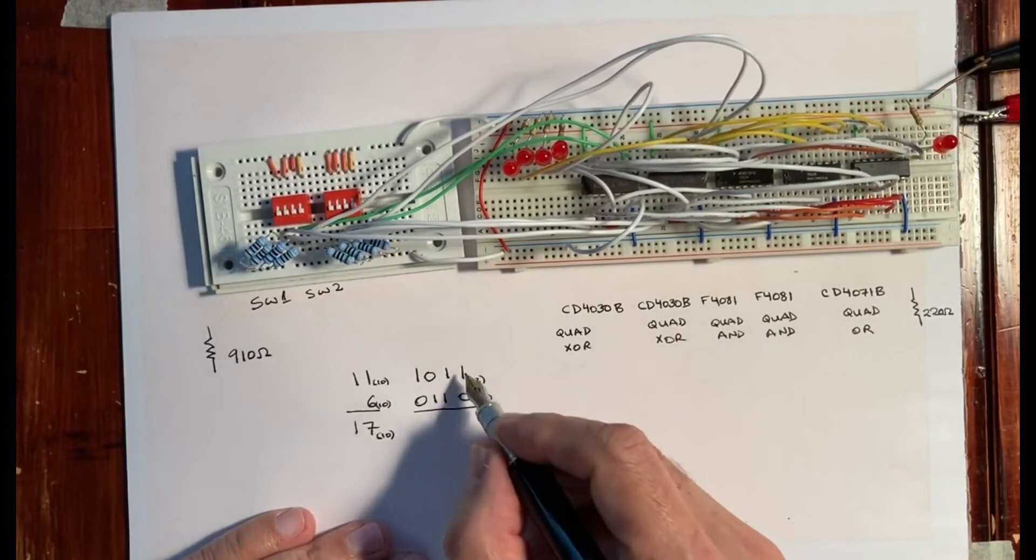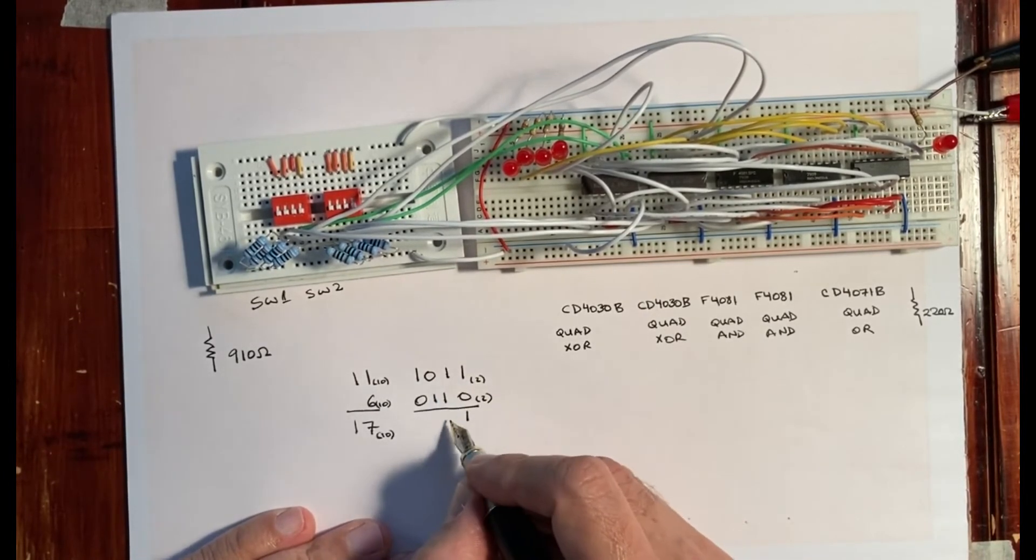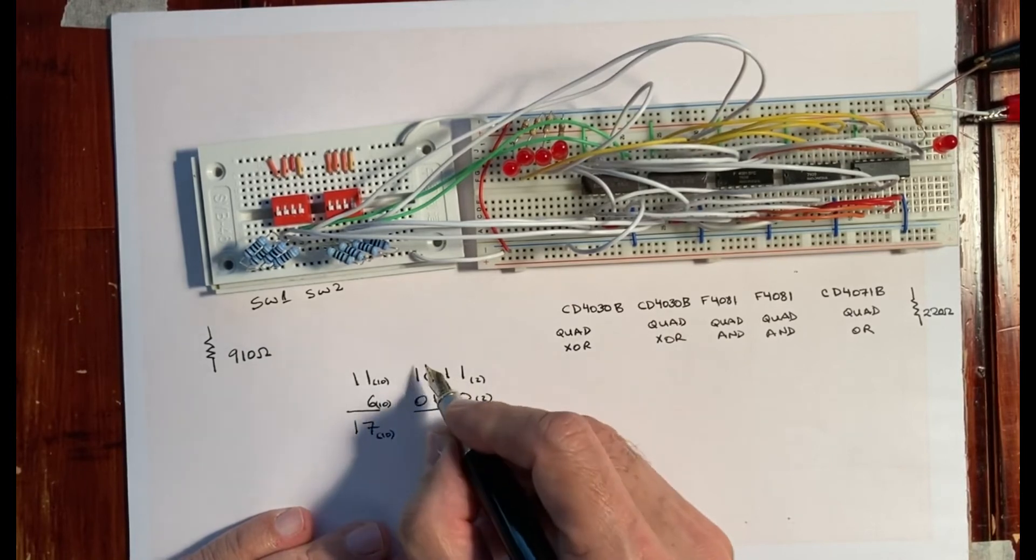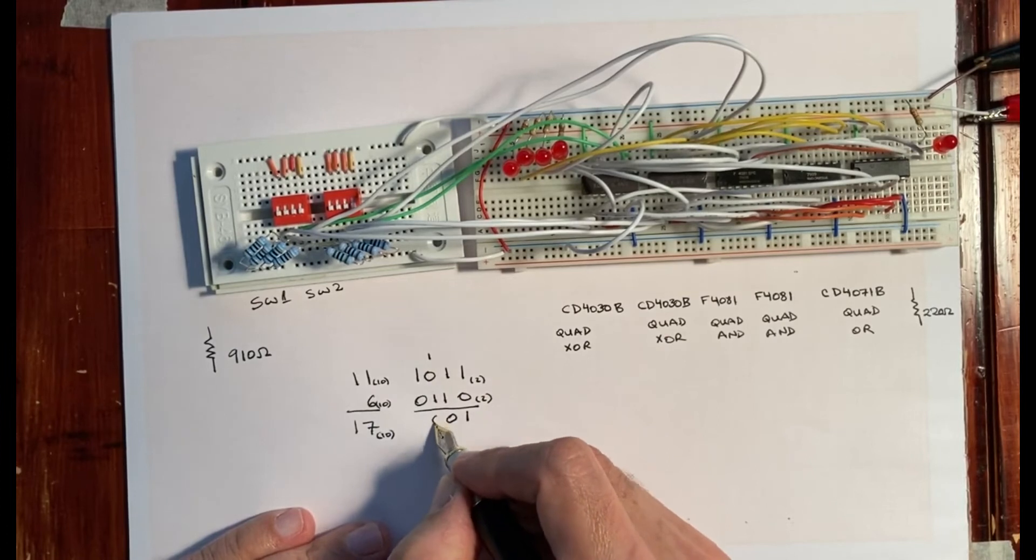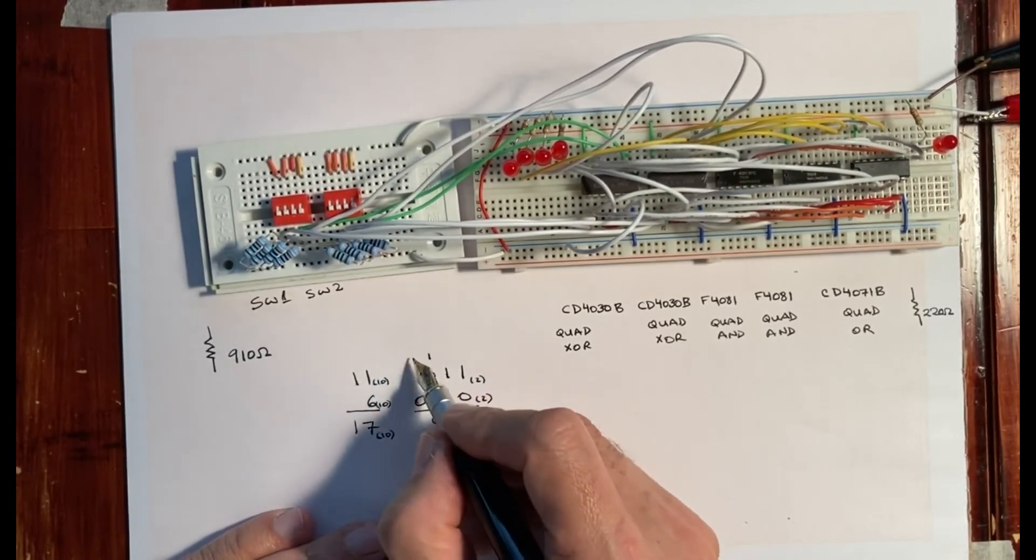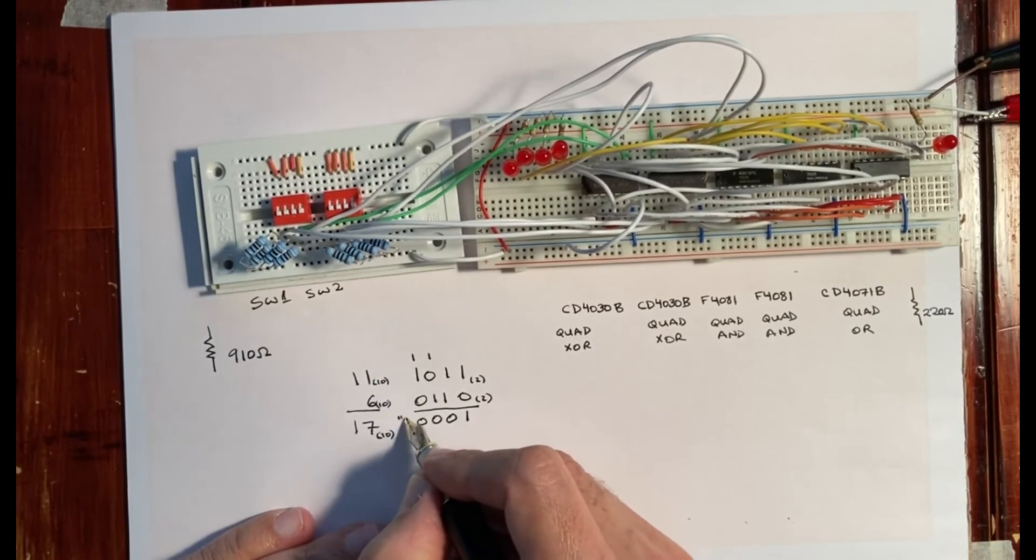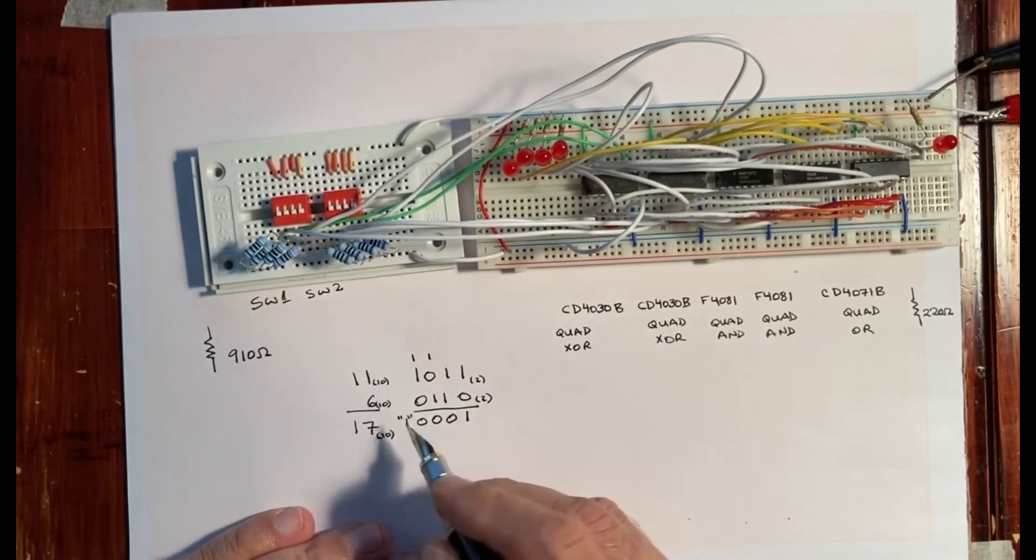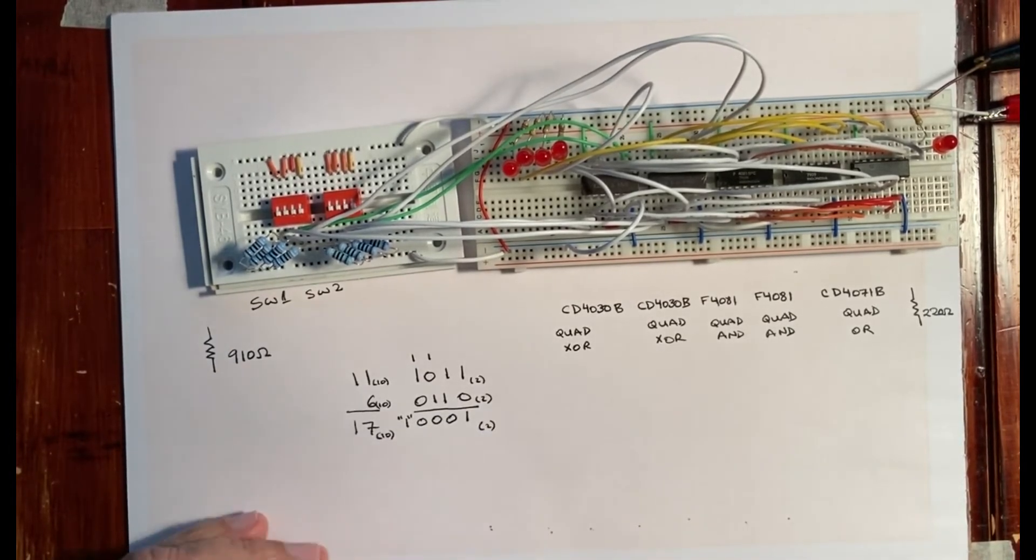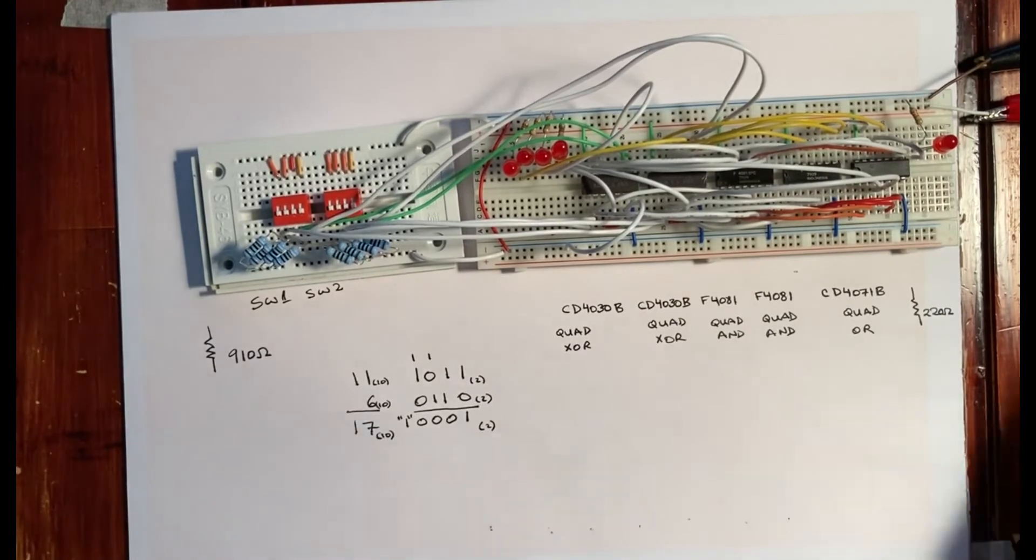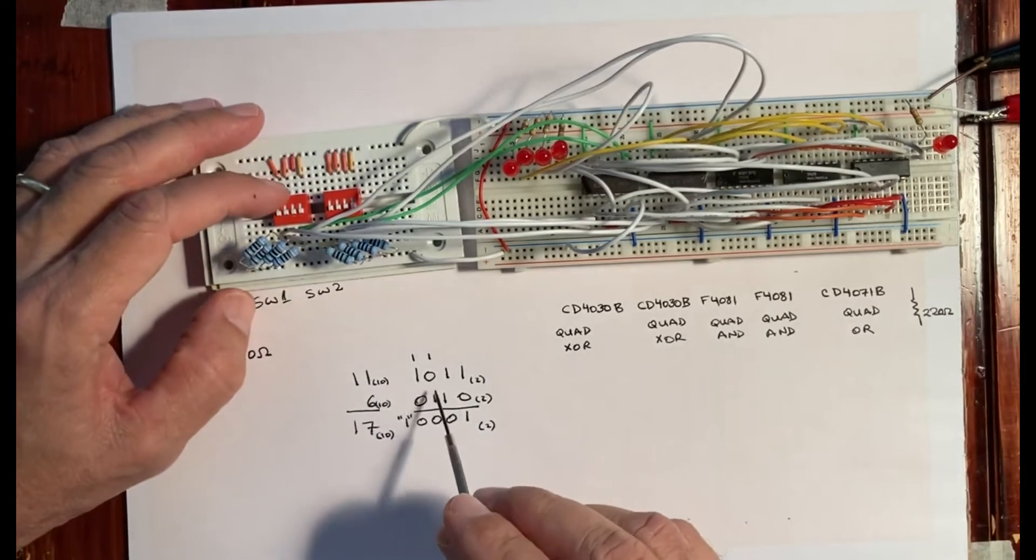And these are base 10. So then what we end up with is 1 plus 0 equals 1. 1 plus 1 equals 0, carry over a 1. 1 plus 1 equals 0, carry over a 1. So if we do this correctly, we should end up with 1, 0, 0, 0, 1, where 1 with the quotes is the carry over.